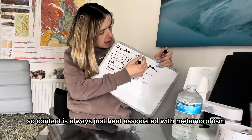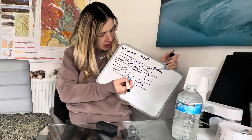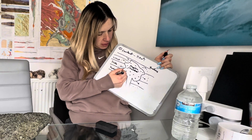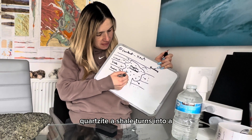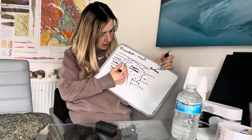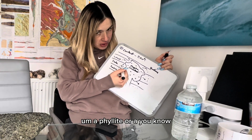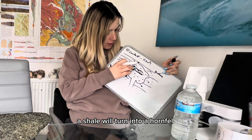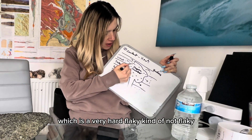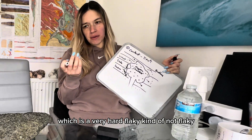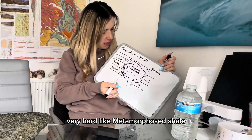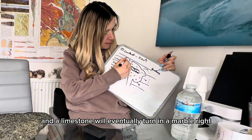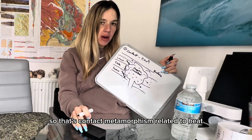You get what's known as a metamorphic aureole forming around this hot magma chamber. Contact metamorphism is always just heat-associated. What happens is: a sandstone turns into a quartzite, a shale will turn into a hornfels - which is a very hard, metamorphosed shale - and a limestone will eventually turn into a marble. That's contact metamorphism, related to heat.